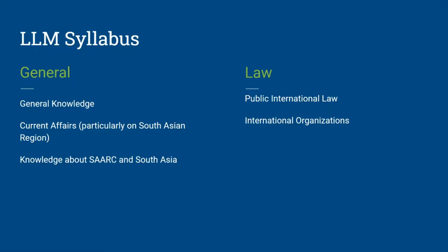Next is jurisprudence, where you should cover schools of jurisprudence, theories given by famous jurists, legal personality, and Hohfeld's Square. For environmental law and biodiversity protection, study principles like the precautionary principle, polluter pays principle, and the no transboundary harm principle, along with key environmental law cases. Also refer to important agreements: Stockholm Declaration 1972, Rio Declaration 1992, Kyoto Protocol, UNCBD, UNFCCC, UNCCD, Montreal Protocol on Ozone, Basel Convention on Hazardous Waste, and the 2015 Sustainable Development Goals.